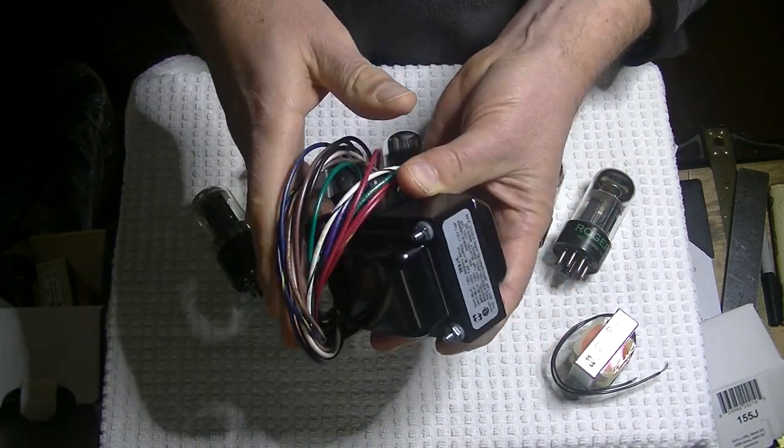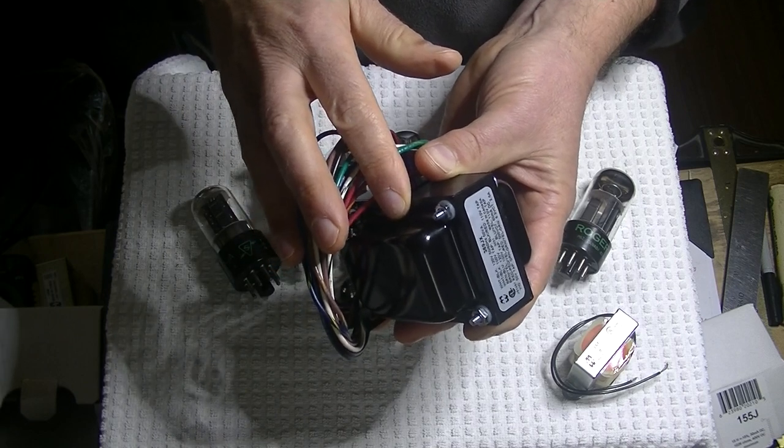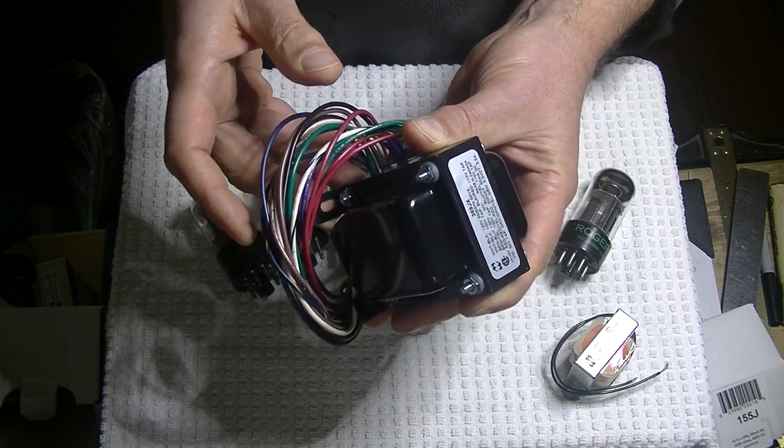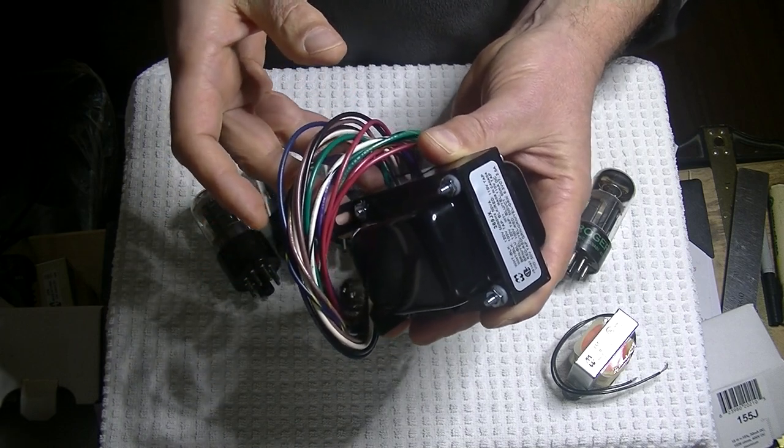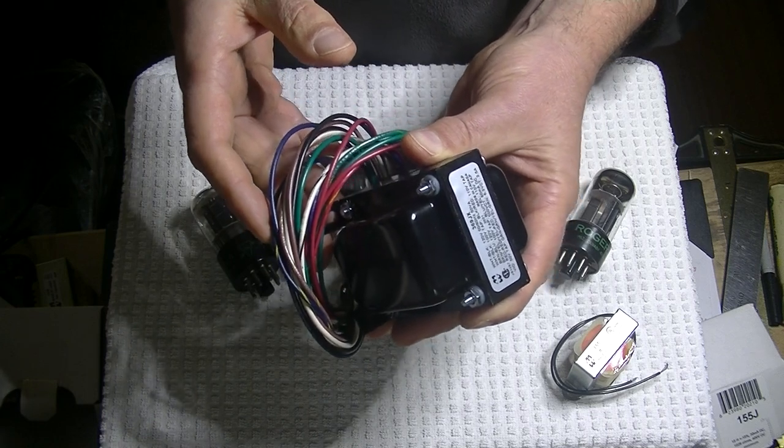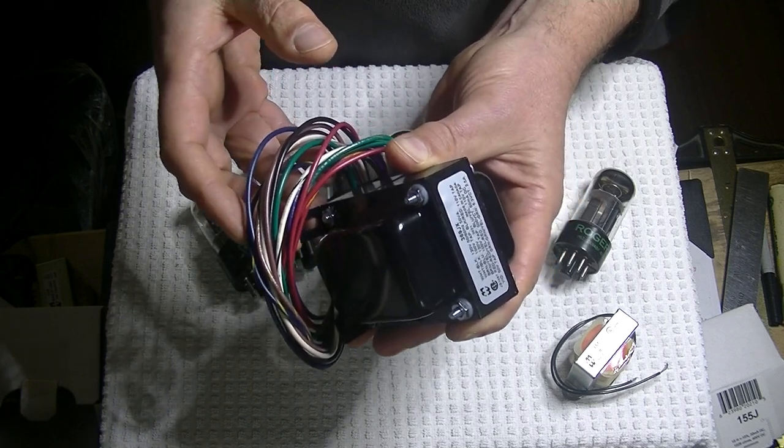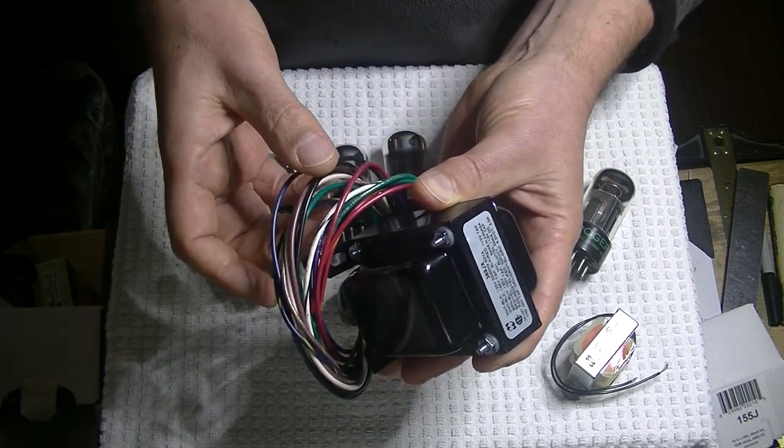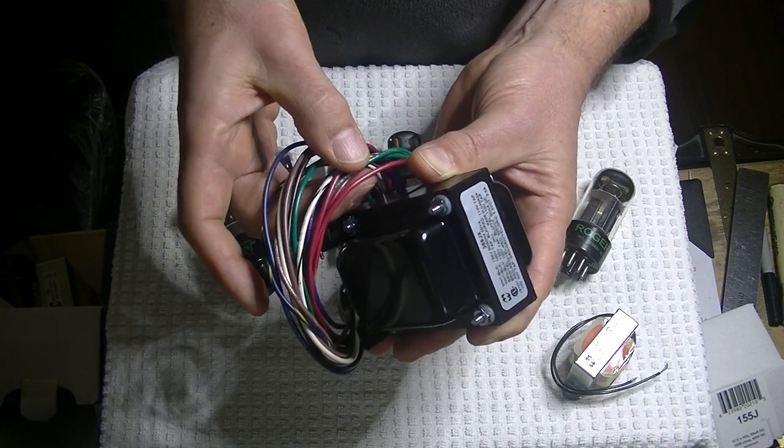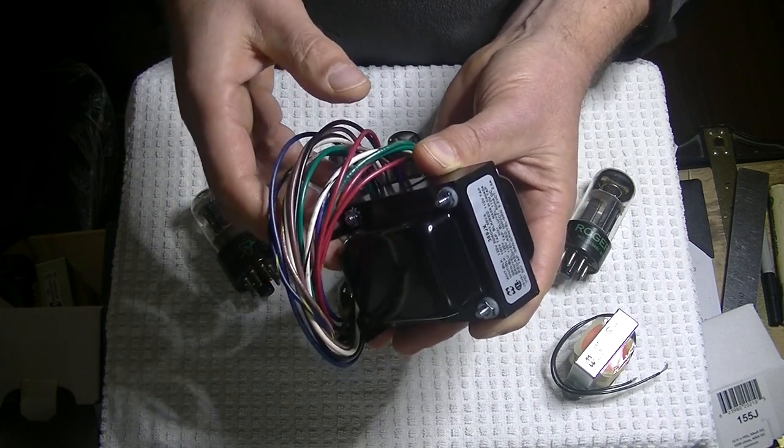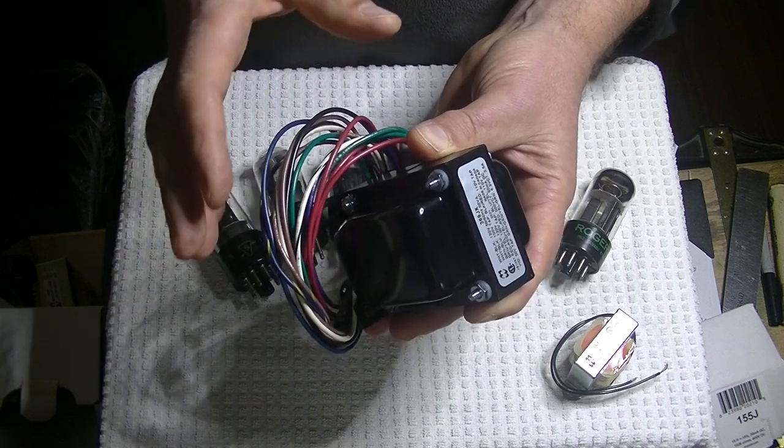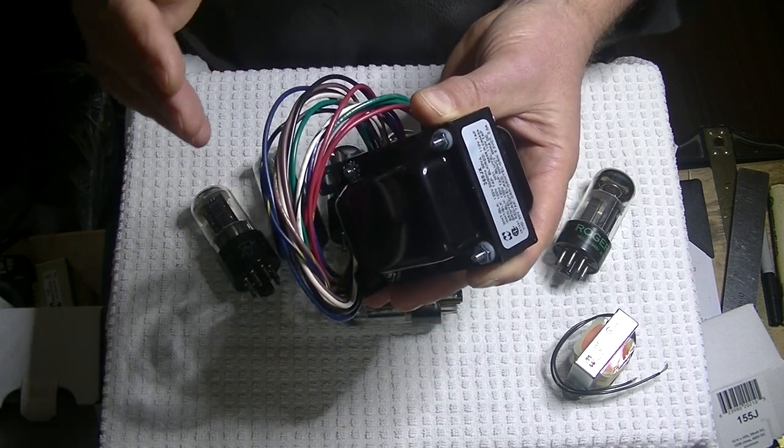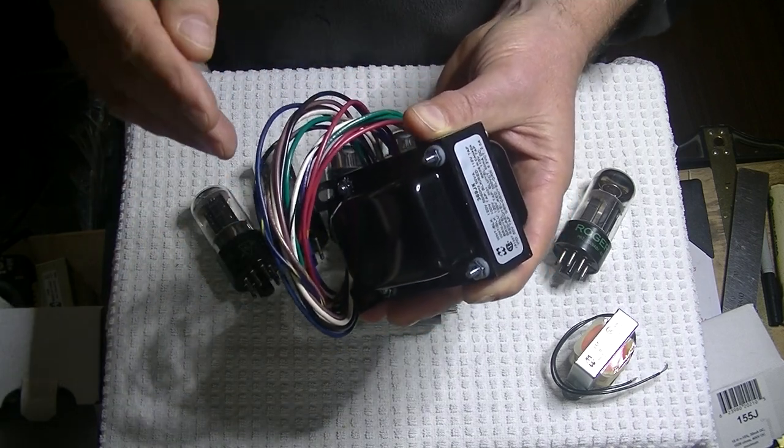And, it doesn't matter where you are in the world, this universal power supply can handle voltages anywhere from about 100 volts AC all the way up to maybe 250 volts AC. And, all you need to do is to follow the drawing showing you which taps you connect up to get your voltage, your household voltage. So, all of the kit amps actually have universal transformers of various types. So, that I can sell the kit amps anywhere in the world and not worry about the voltage.